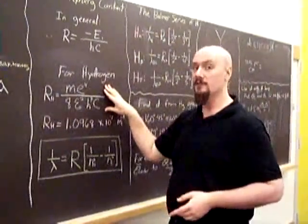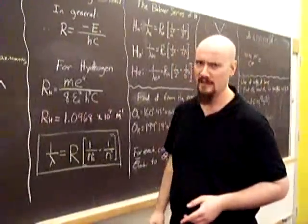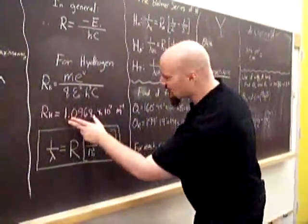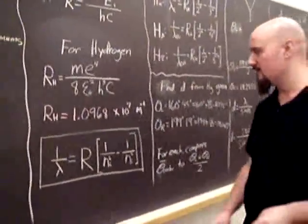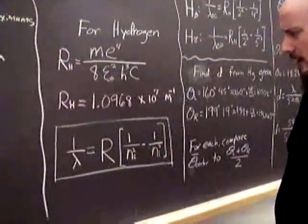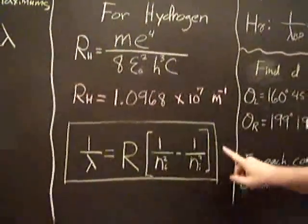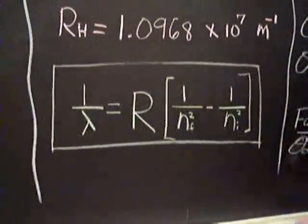And then for hydrogen specifically, we can calculate that using universal constants. And I do recommend at least one time in your physics life you actually plug these in and calculate it. And what you'll get is our accepted value, 1.0968 times 10 to the minus 7. So for today, this is what we need.